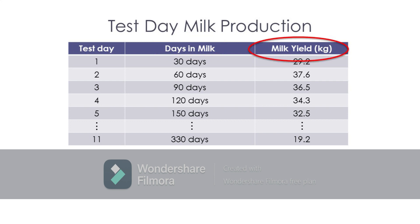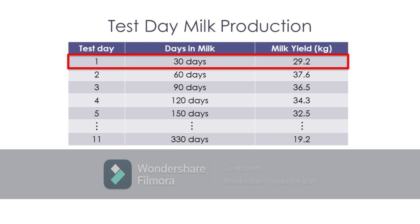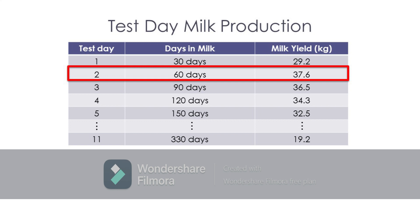Milk yield refers to the amount of milk produced by the animal in kilograms on a given test day. Milk yield recorded at test day 1 on the 30th day of lactation is 29.2 kilograms, at test day 2 on the 60th day of lactation with 37.6 kilograms, and so on. If we plot these values into a graph, we could generate a typical lactation curve.